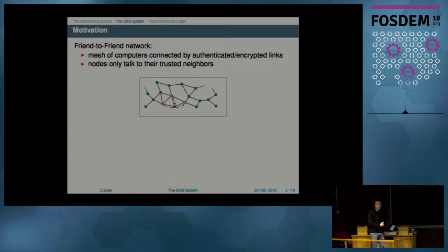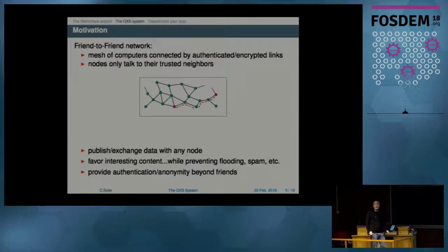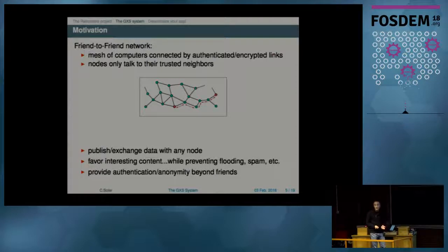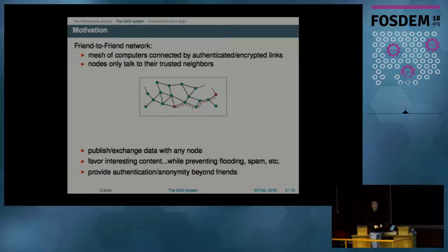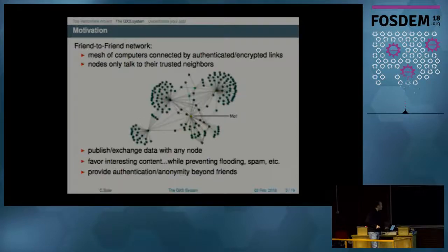What is the problem? We have a mesh of computers which only talk to their neighbors, and we want to distribute data beyond friends. We want to do that while favoring interesting content, but also preventing flooding attacks and spam, and providing some guarantee of authentication or anonymity depending on the kind of usage.